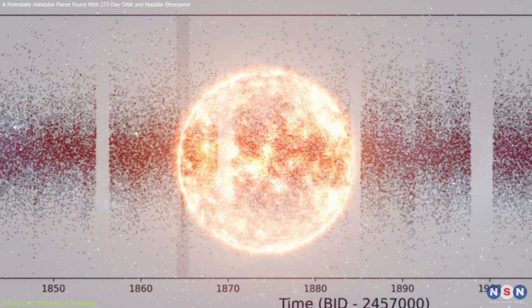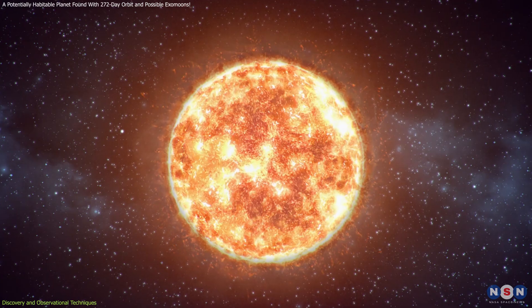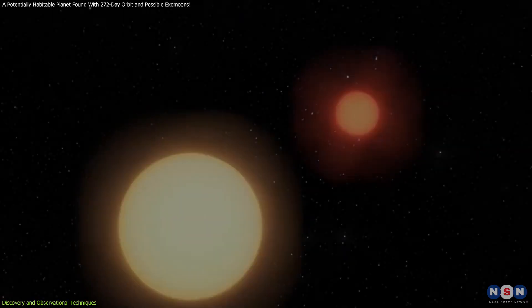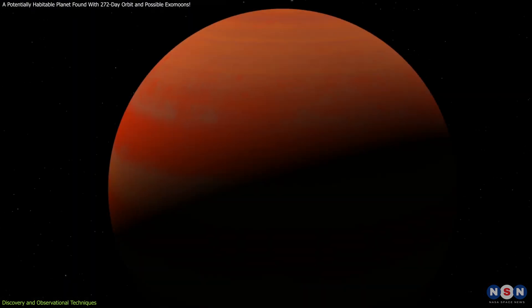These observations included measuring the star's radial velocity, which involves detecting tiny wobbles in the star's motion caused by the gravitational tug of nearby companions, which provided further evidence supporting the presence of this exoplanet.